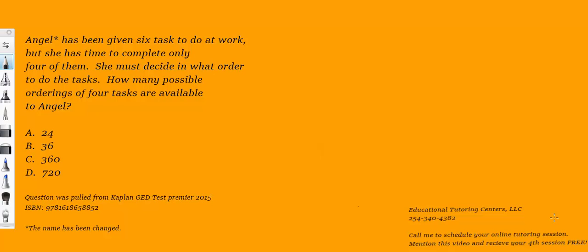The question says Angel has been given six tasks to do at work, but she has time to complete only four of them. She must decide in which order to do the tasks. How many possible orderings of four tasks are available to Angel?